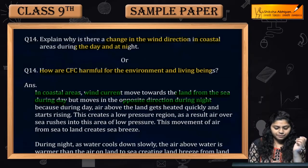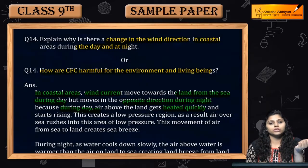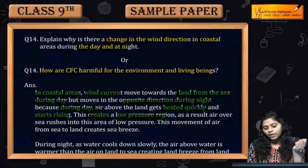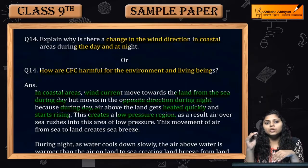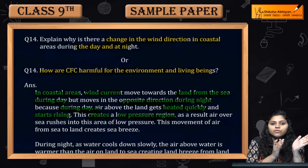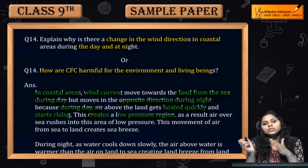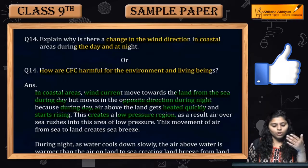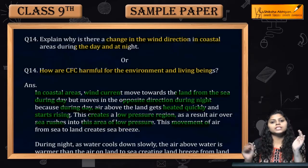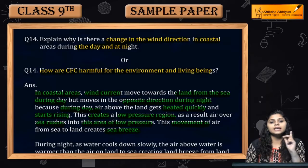During the day, the air above the land heats up quickly and starts rising, जिसकी वजह से land में low pressure region create हो जाता है. Sea के ऊपर जो air है उसमें ज़्यादा pressure होगा. So movement होगी from the region of higher pressure to lower pressure — sea से land तक. This movement of air from sea to land, from higher pressure to lower pressure region, creates sea breeze, क्योंकि sea से land की तरफ आ रही है.